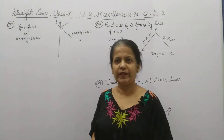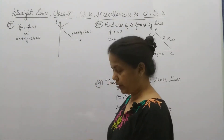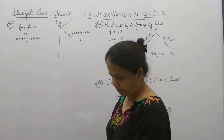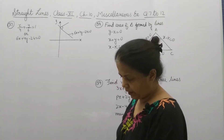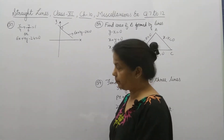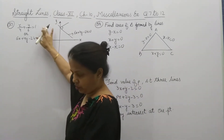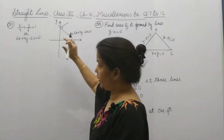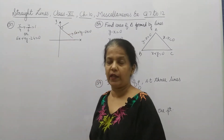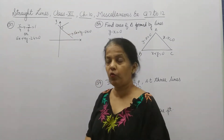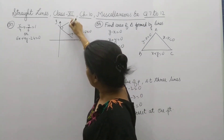Hello everyone. Now question number 7. Question 7 is: find the equation of the line drawn perpendicular to this line through the point where it meets the y-axis. So we have to find out the equation of this line.